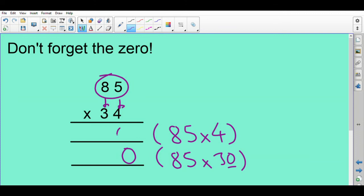5 times 4 is 20, carry the 2. 8 times 4 is 32, add the 2 is 34. So 85 times 4 is 340. And I can just do a quick check in my head: double 85 is 170, double 170 is 340. Now on to the second part of the calculation. I've already put the zero in. 5 times 3 is 15, carry 1. 8 times 3 is 24, add the 1 is 25. So now I've got 340 add 2550.